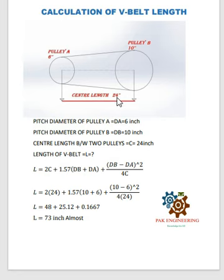We have a formula: L equals 2C plus 1.57 into DB plus DA. DB is the pitch diameter of pulley B, and DA is the pitch diameter of pulley A, plus DB minus DA power 2 divided by 4C.